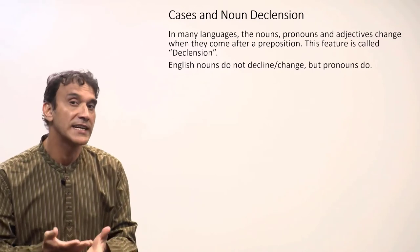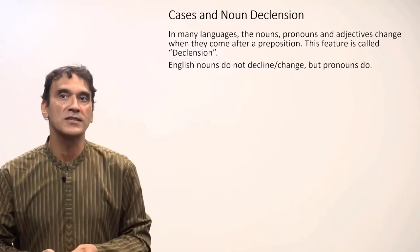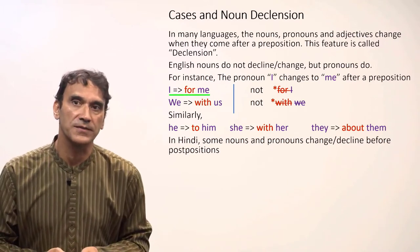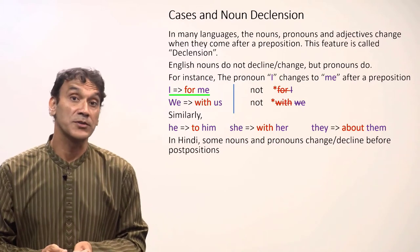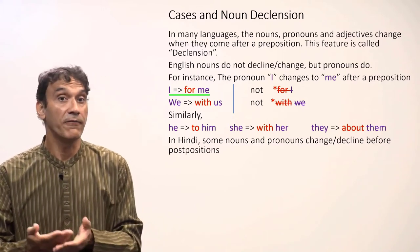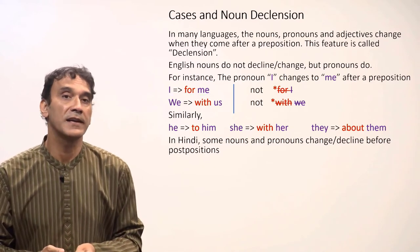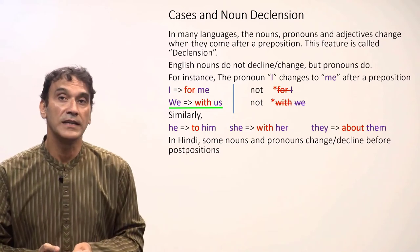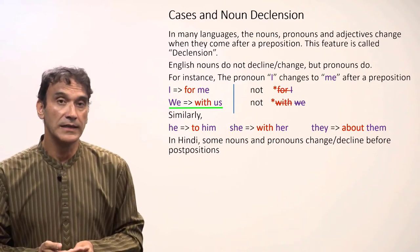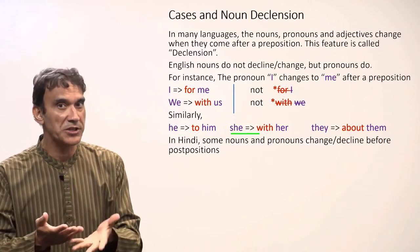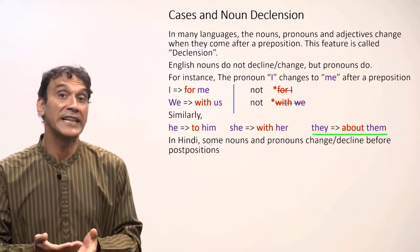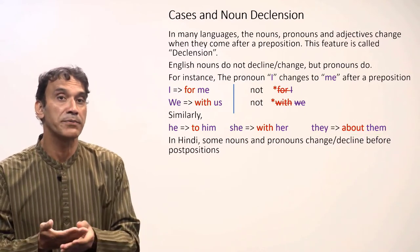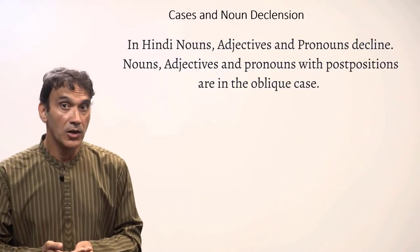In English, nouns and adjectives do not decline — only pronouns do. For example, the pronoun 'I' changes to 'me' after a preposition: 'for me,' never 'for I.' Similarly, 'we' changes to 'us' — 'with us,' never 'with we.' 'He' becomes 'him,' 'she' becomes 'her,' and 'they' becomes 'them' — for example, 'about them.'